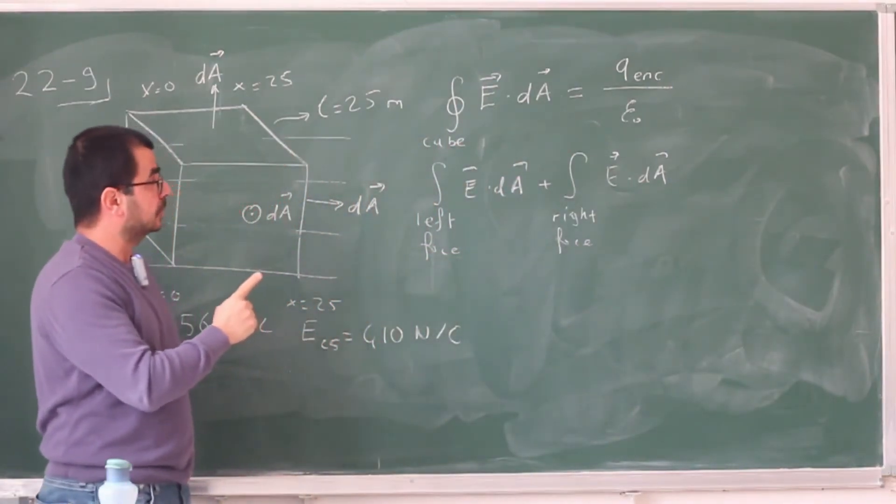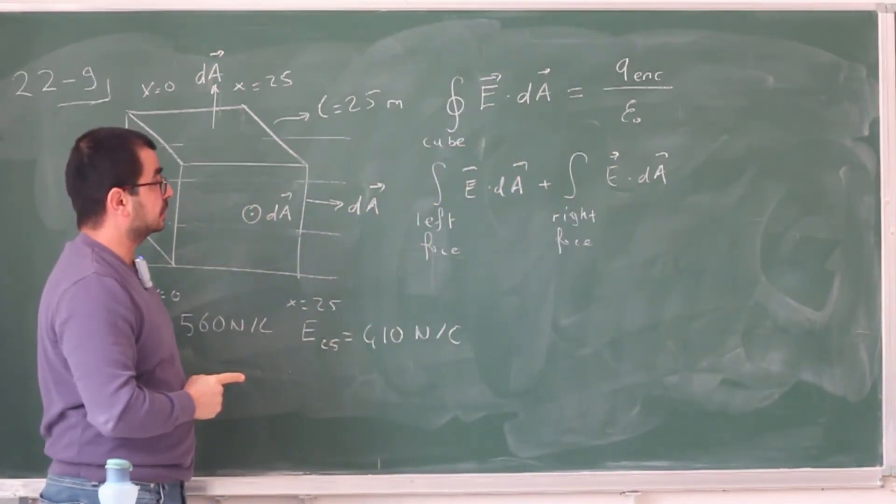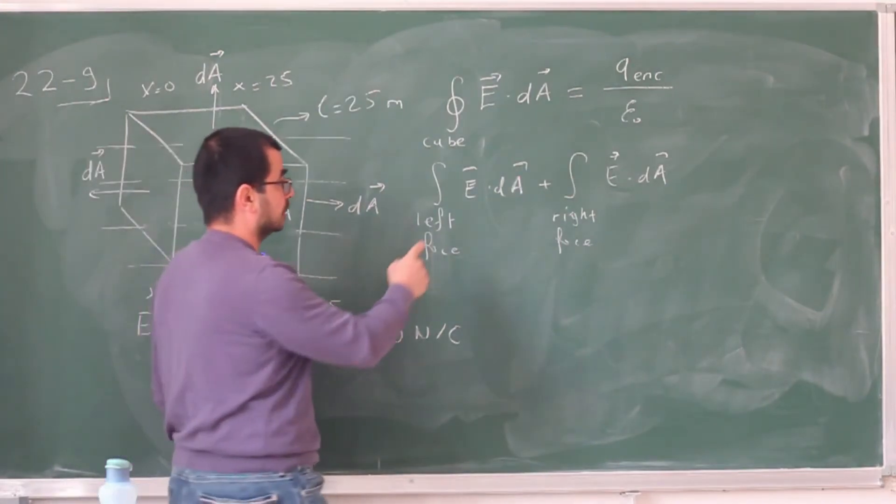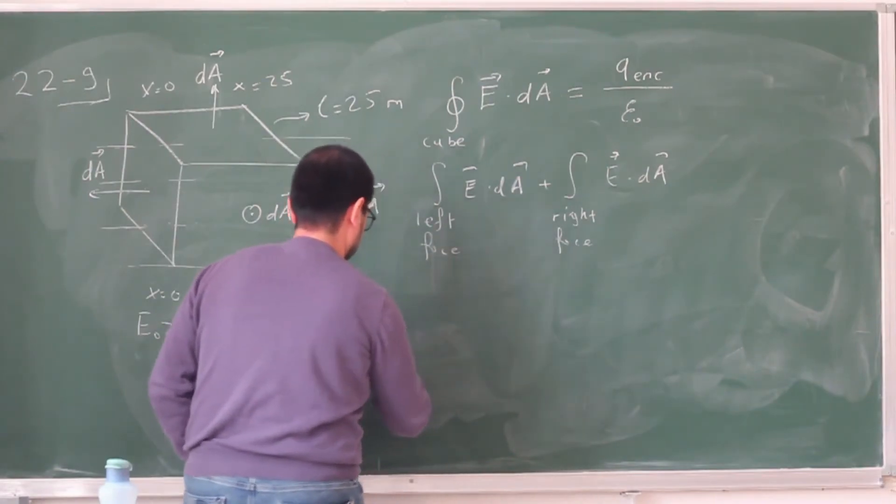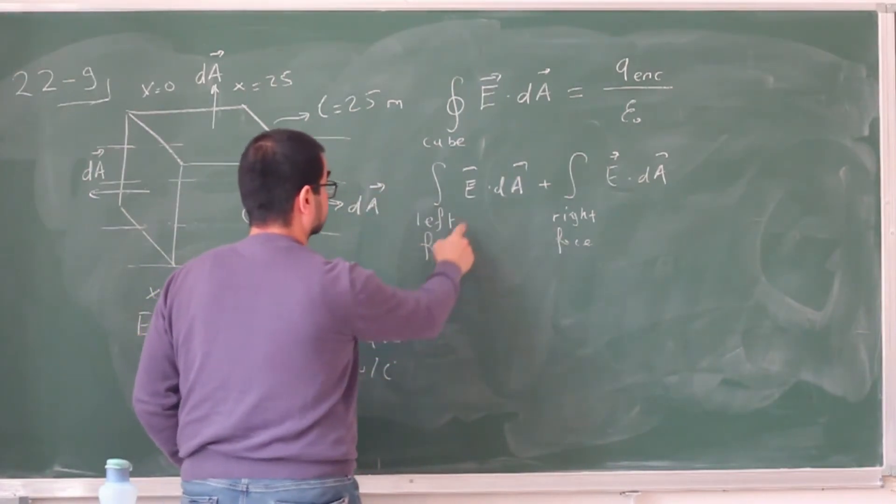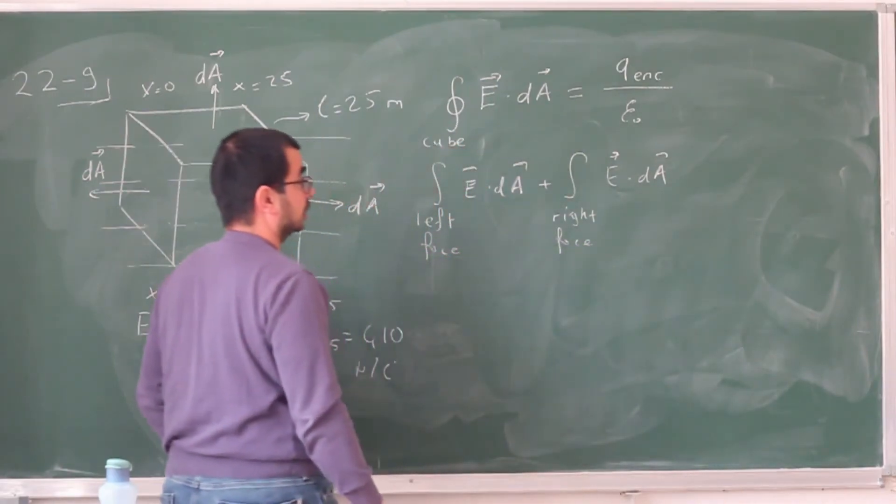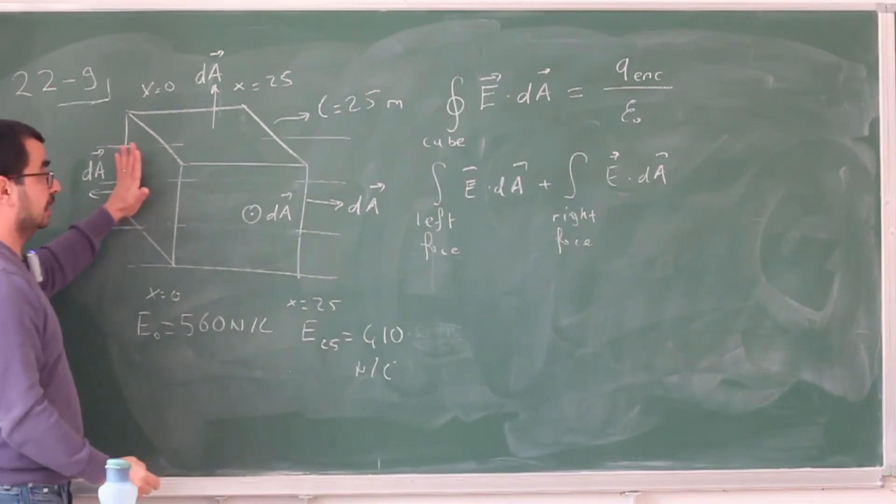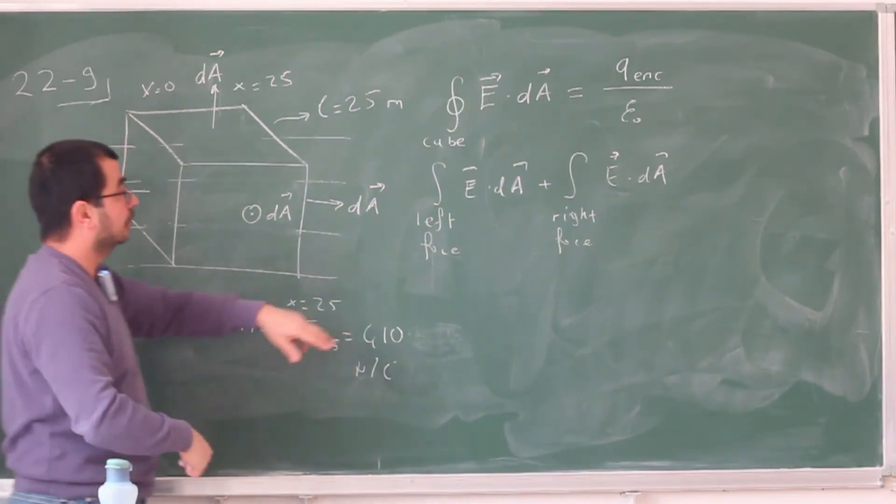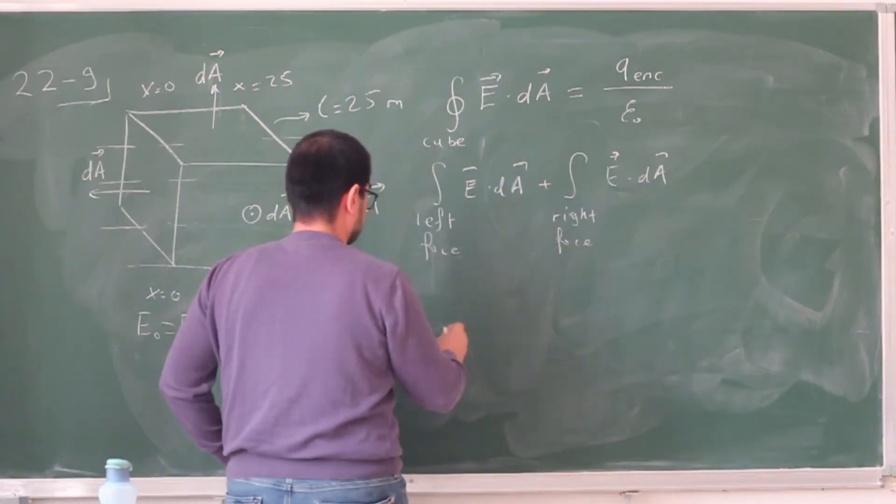And for those faces, we know what dA is. It's constant. And we can actually just turn these into simple products. So this one becomes a simple product with a negative sign. So let me move this over here. And this is going to just become a simple product with a positive sign. In this case, these two vectors for the left face are anti-parallel. They're in opposite direction. And in this case, they're parallel.